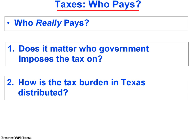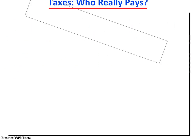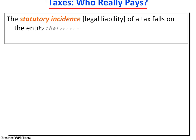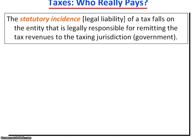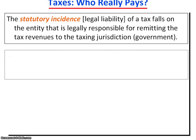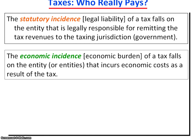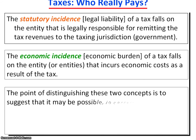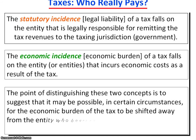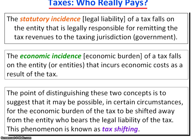To answer the first question, let's begin by distinguishing two fundamental concepts: statutory incidence versus economic incidence. The statutory incidence, or legal liability of a tax, falls on the entity that is legally responsible for remitting the tax revenues to the taxing jurisdiction — that is, paying the tax to government. The economic incidence, or the economic burden of a tax, falls on the entity or entities that incur the economic cost as a result of the tax. The point of distinguishing these two concepts is to suggest that it may be possible, in certain circumstances, for the economic burden of the tax to be shifted away from the entity who bears the legal liability of the tax. This phenomenon is known as tax shifting.